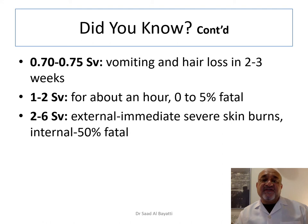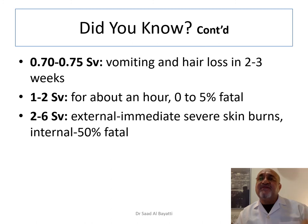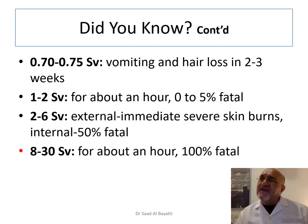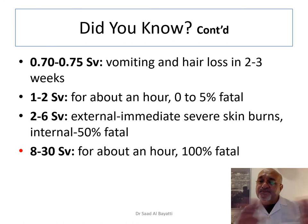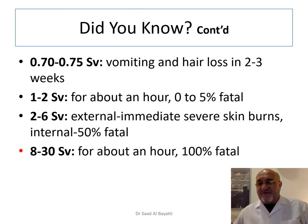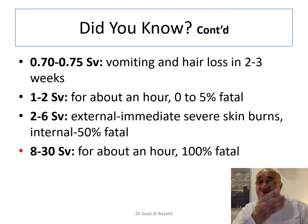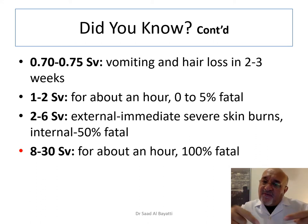A dose of 1 to 2 Sieverts for about one hour causes a 5% death rate. A dose of 2 to 6 Sieverts causes immediate severe skin burns and a 50% death rate. A dose between 8 to 30 Sieverts in a single dose for one hour results in near total fatality. These figures are taken from survivors of the Hiroshima and Nagasaki atomic bombs — the data was extracted from their generation.